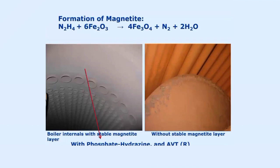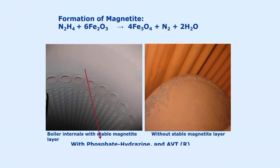So how and when is the magnetite formed? When we are using the treatment of phosphate hydrazine, which is a conventional treatment, or the all-volatile treatment — ABT stands for all-volatile treatment and ABTR stands for all-volatile treatment reducing — under such conditions, we develop the magnetite protective oxide in our system.